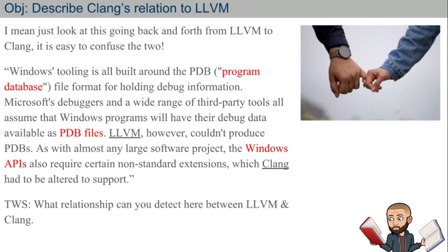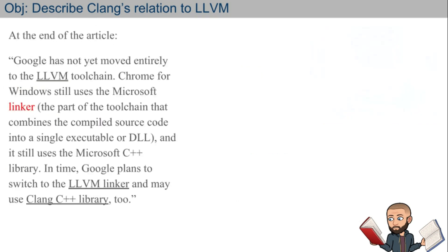LLVM couldn't produce PDBs. As with almost any large software project, Windows APIs also require certain non-standard extensions which Clang had to be altered to support. When there are problems with APIs, it's Clang's job to fix that problem, and then LLVM comes in and does its thing. LLVM can turn everything into the ones and zeros the computer needs.